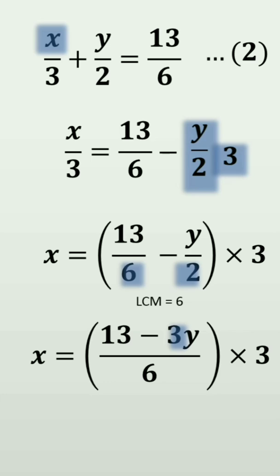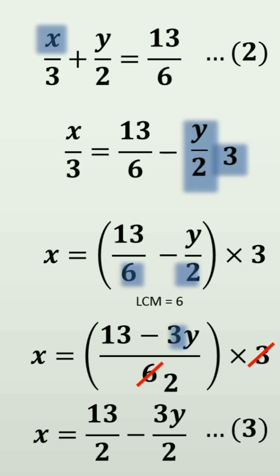Why have I written 3 here? 2, 3 is 6. So, y into 3 is 3y. 3 twos are 6. So, x is equal to 13 by 2 minus 3y by 2.